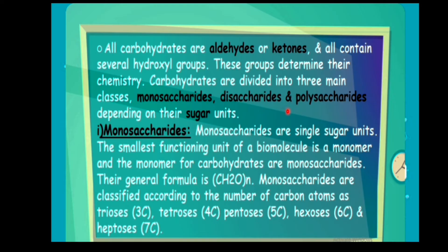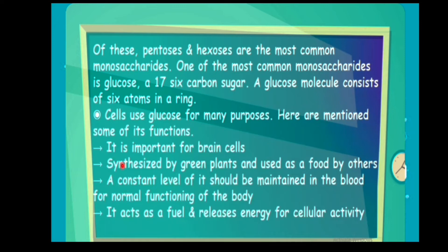There are many types of monosaccharides classified by carbon number. Trioses have three carbons, tetroses have four, pentoses have five. Of these, pentoses and hexoses are the most common monosaccharides.